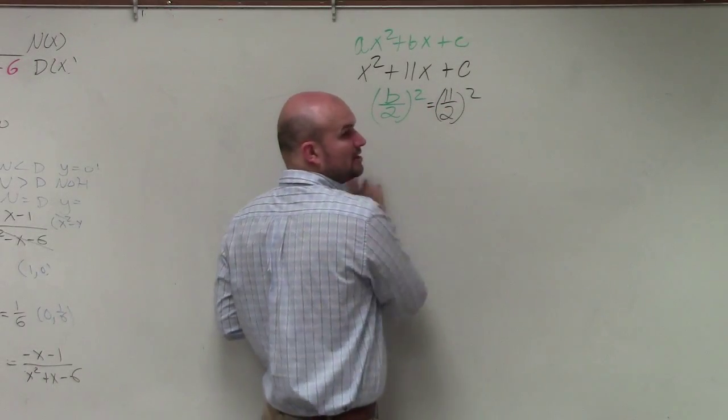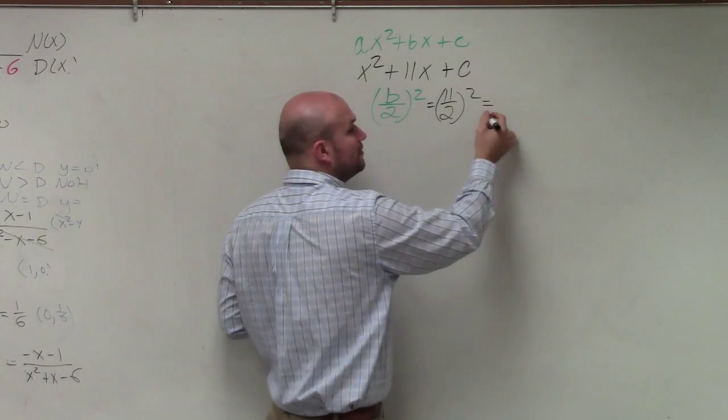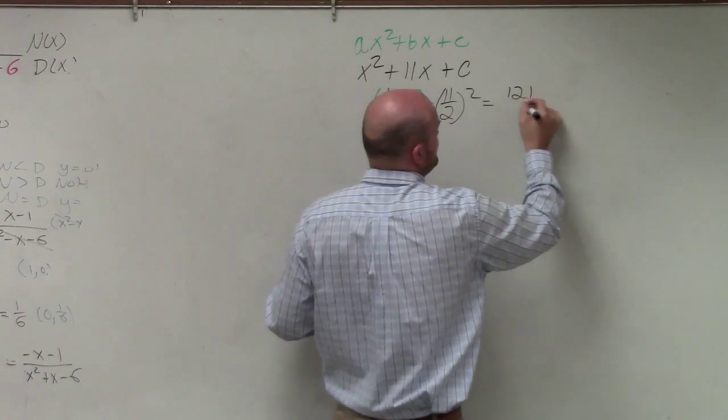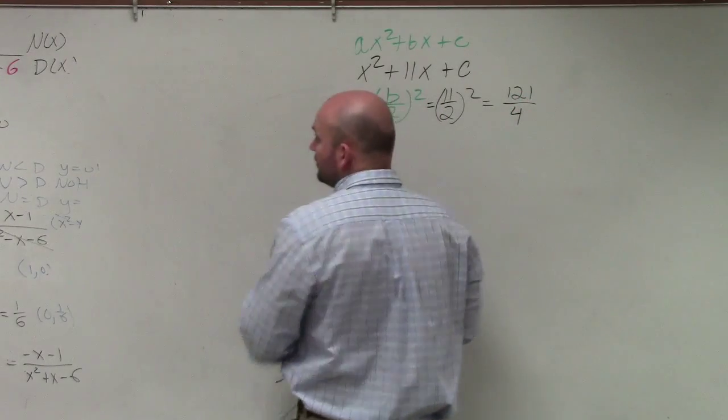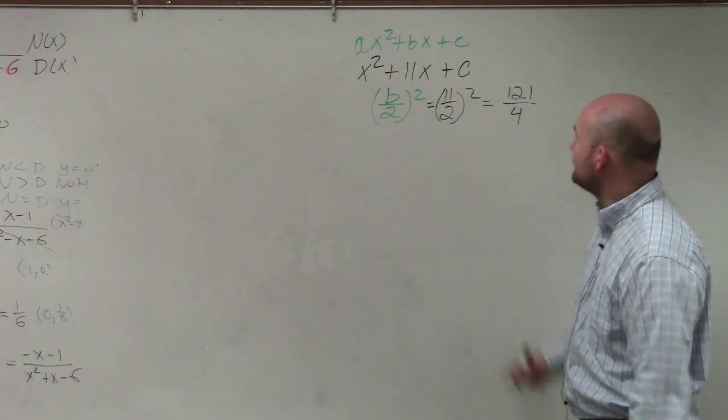So now I need to square 11 halves. Well, 11 halves squared is 11 halves times 11 halves, or 11 squared over 2 squared, which is 121 over 4. If you don't know your square numbers, you can see 121 is 11 squared. Look at that.